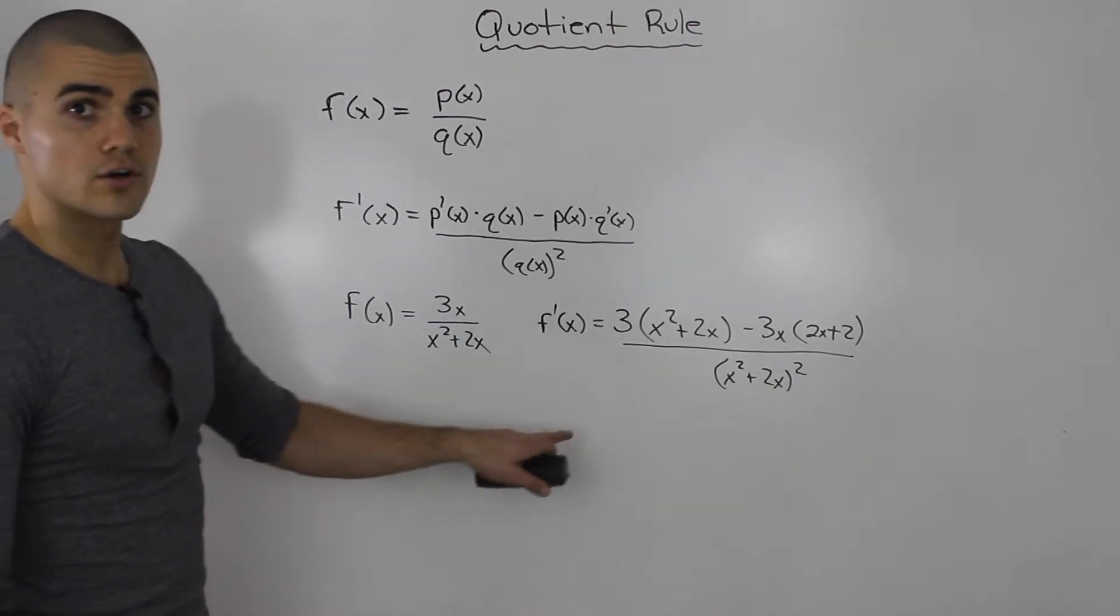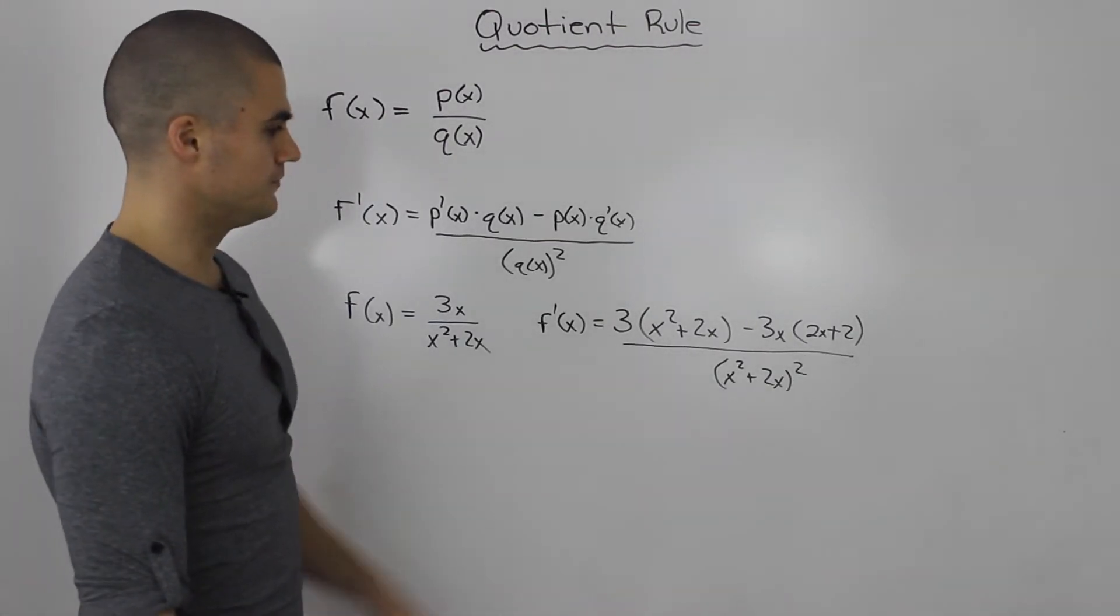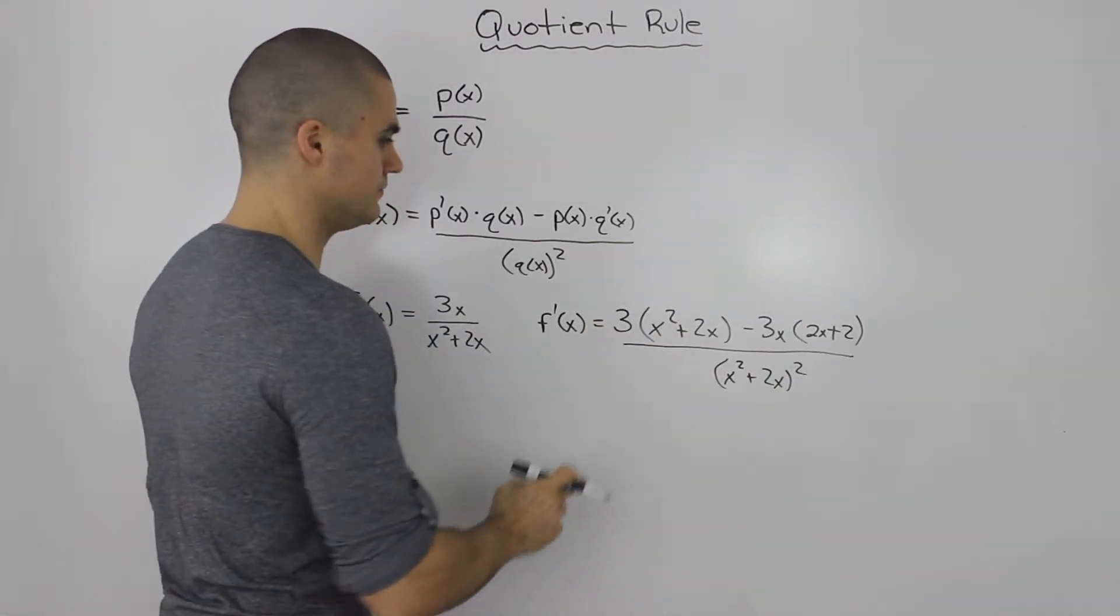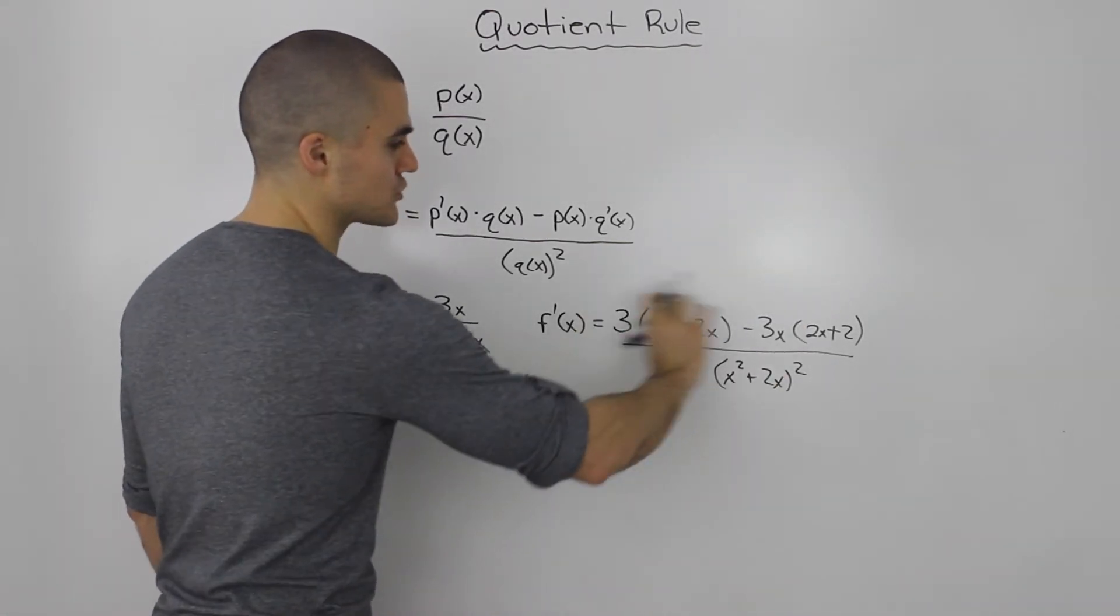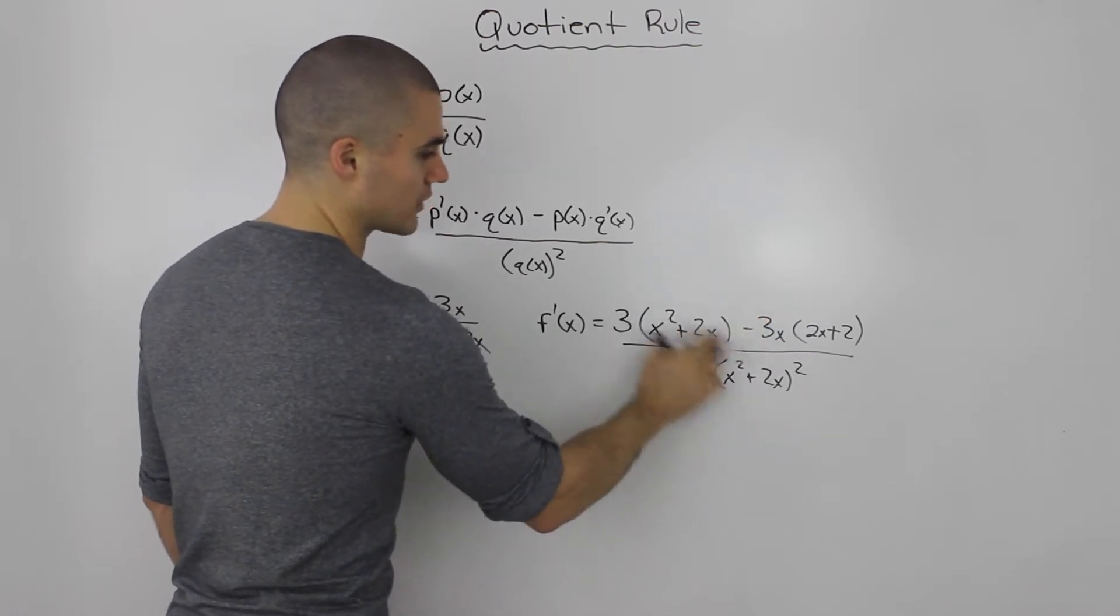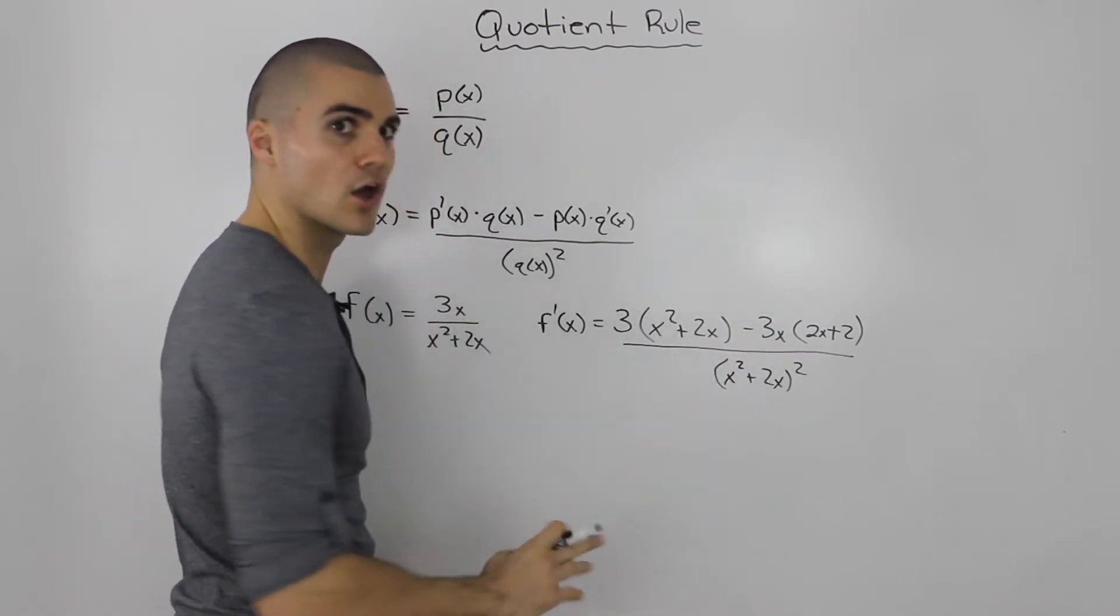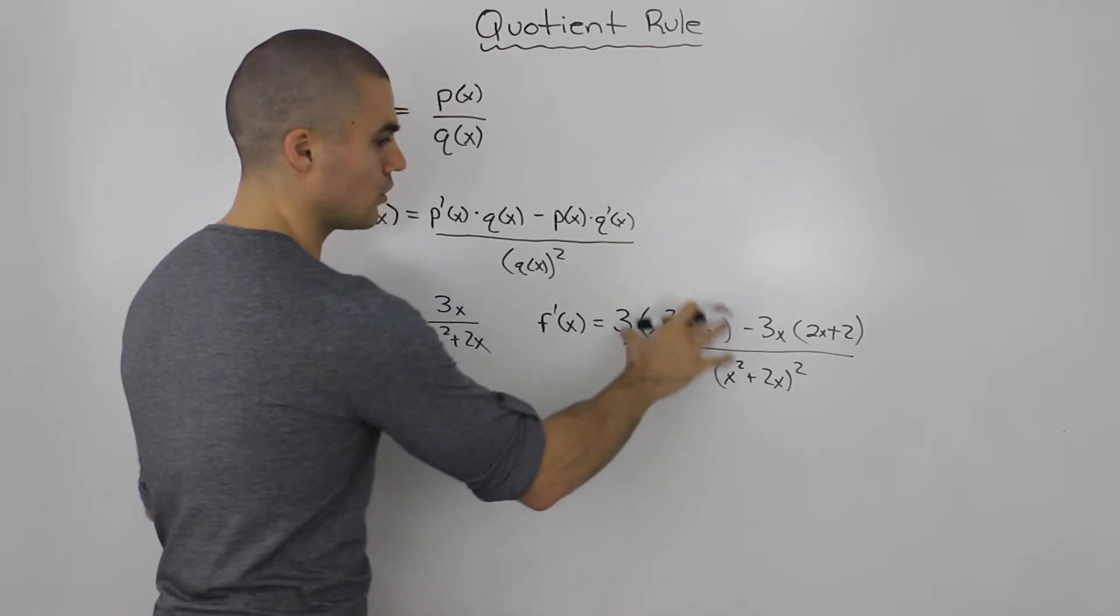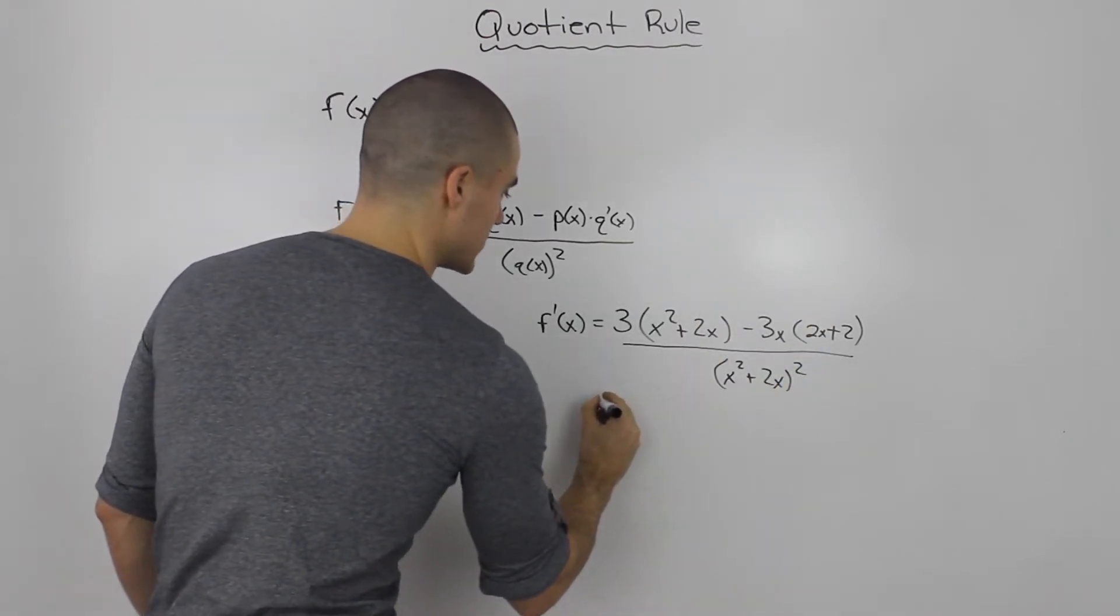Whenever you're working with the quotient rule, make sure you simplify the numerator, because often after simplifying, you'll be able to cancel things out with the denominator. Not always, but sometimes, and it'll simplify even more. Always simplify the numerator.